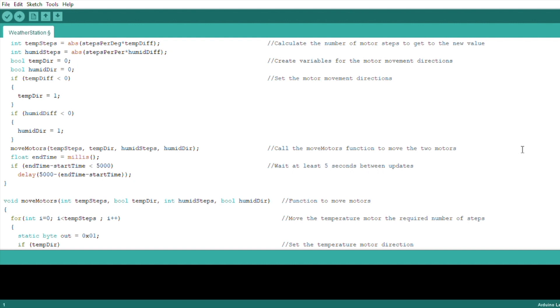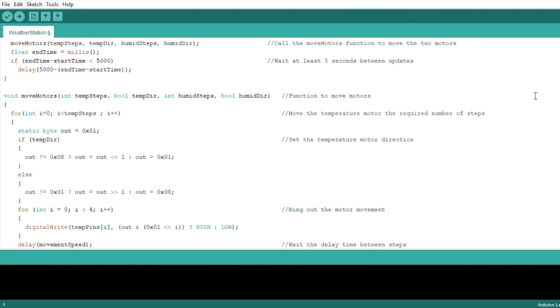This delay can be increased or decreased depending on how quickly your environment is likely to change. If you're in a large room or outdoors, then you could change this update time to be every couple of minutes rather.